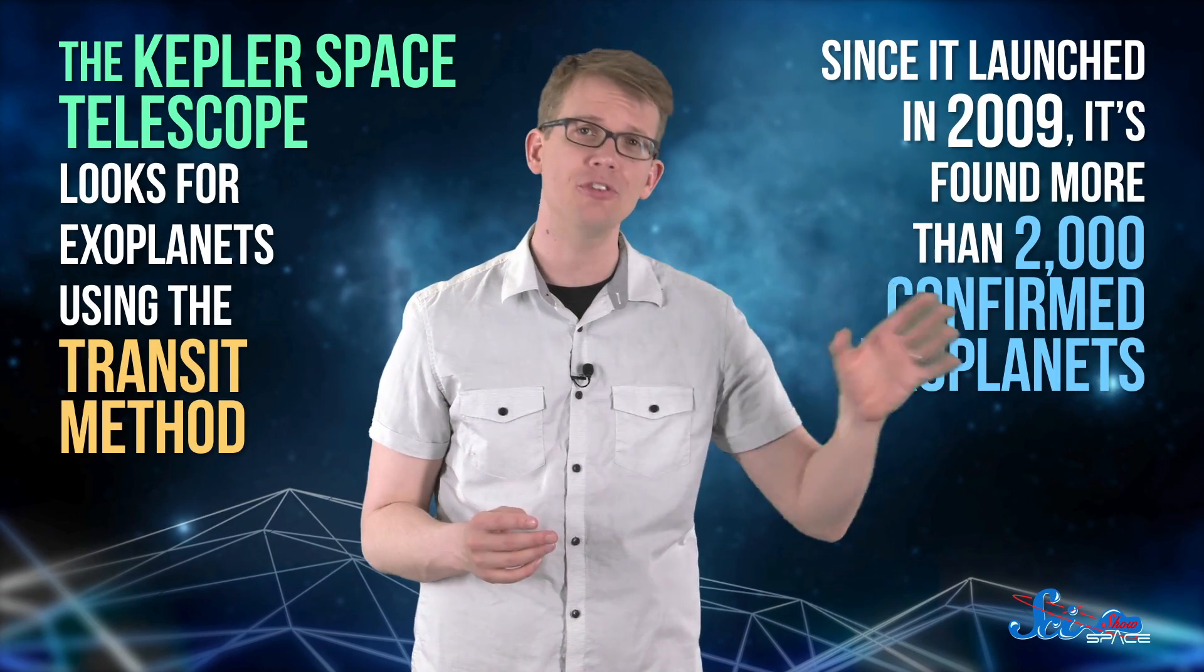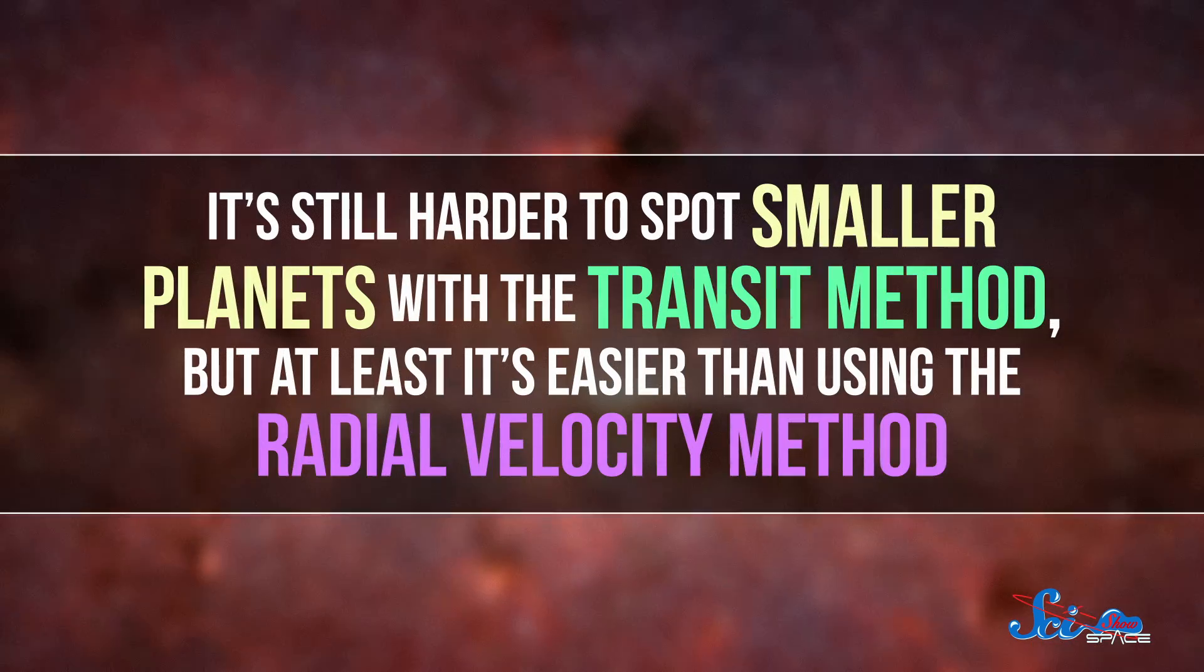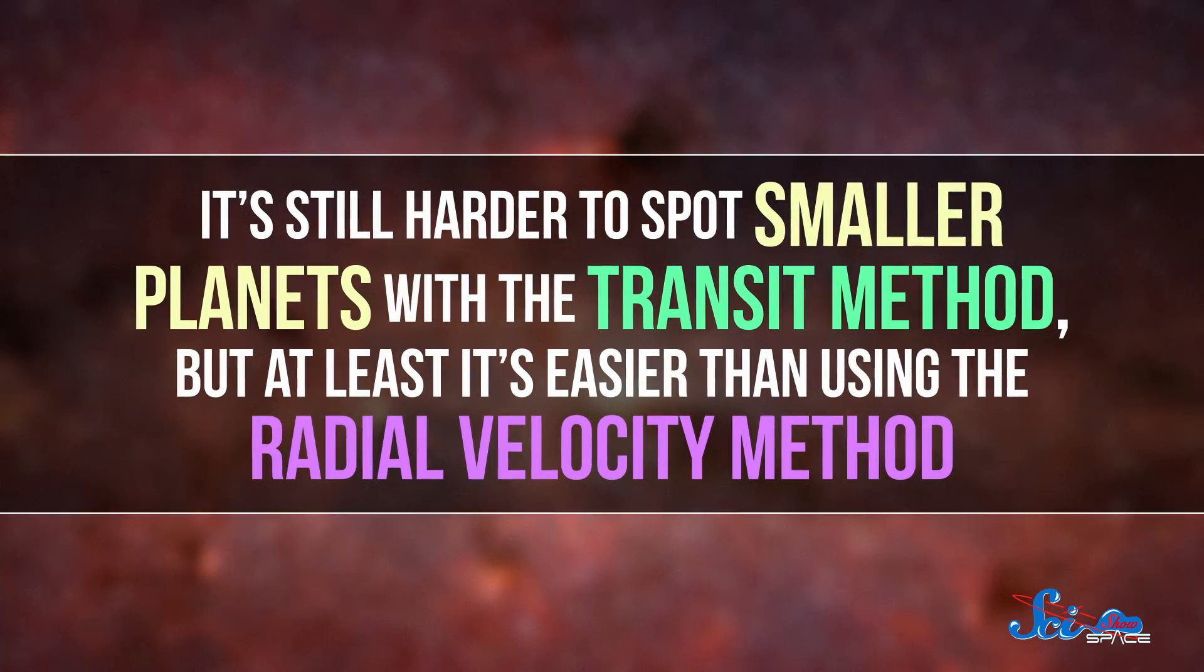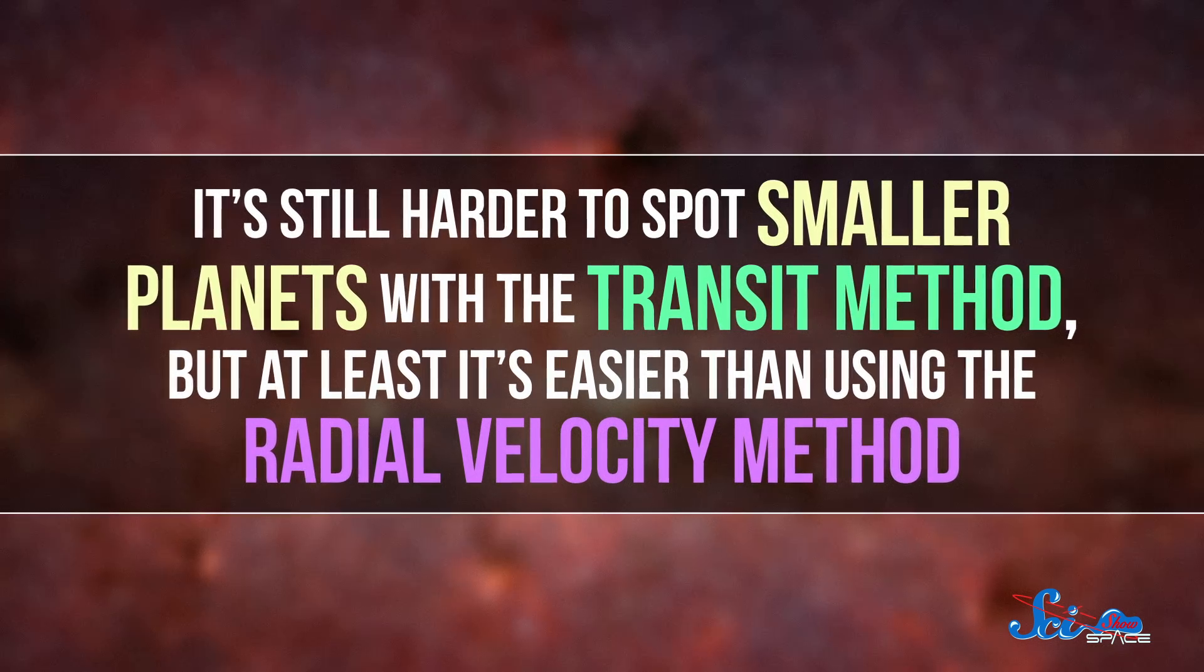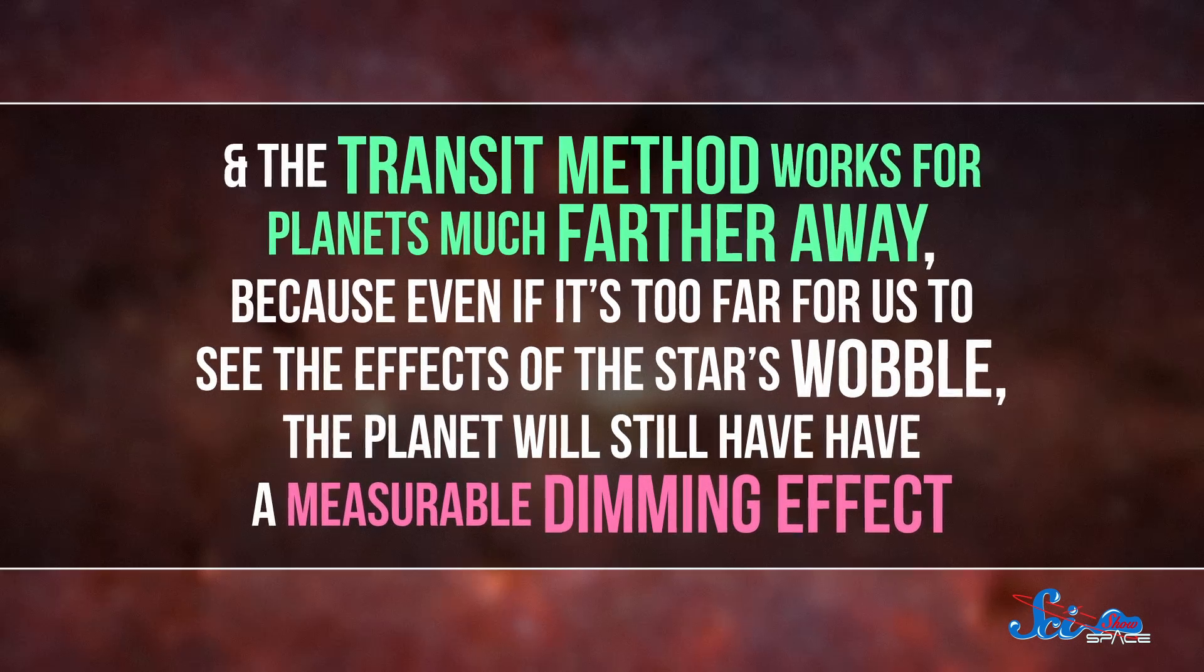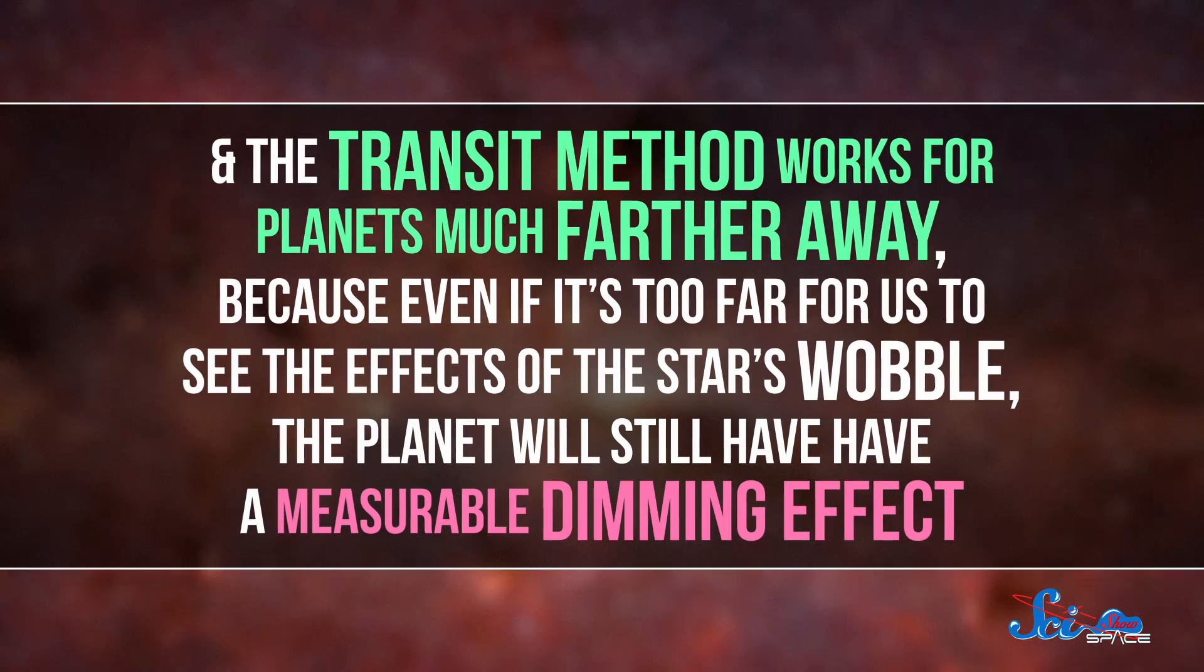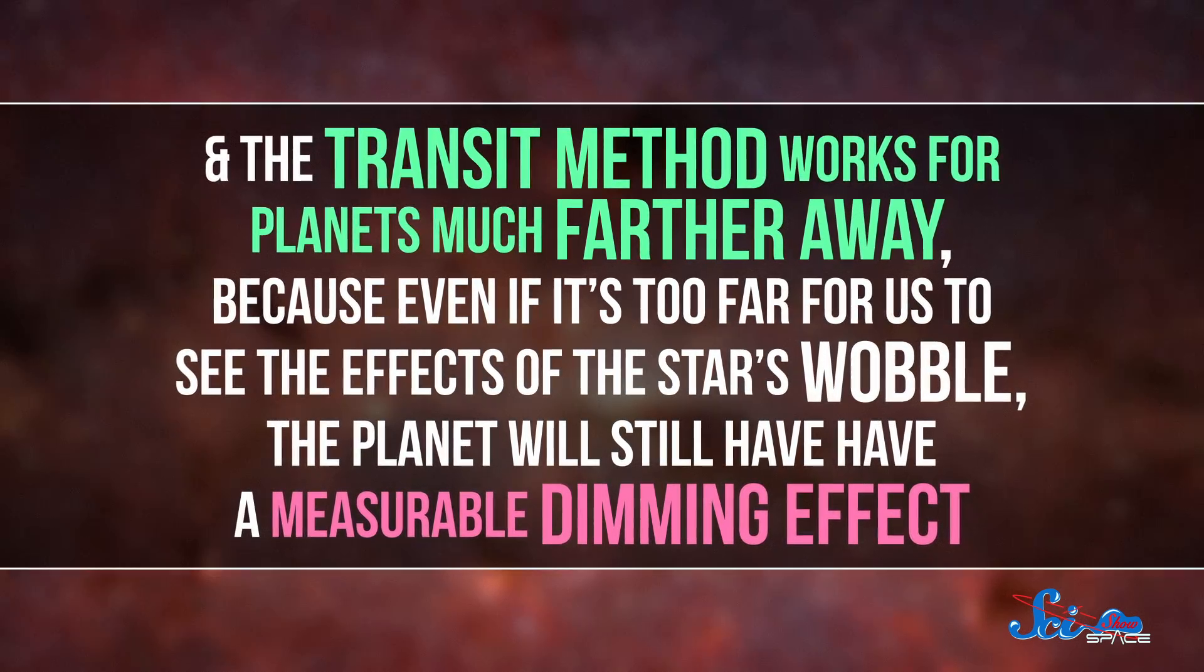The Kepler Space Telescope looks for exoplanets using the transit method. Since it launched in 2009, it's found more than 2,000 confirmed exoplanets. It's still harder to spot smaller planets with the transit method, but at least it's easier than using the radial velocity method. And the transit method works for planets that are much farther away, because even if it's too far for us to see the effects of a star's wobble, the planet will still have a measurable dimming effect. We've used the transit method to find plenty of planets hundreds of light-years from Earth.